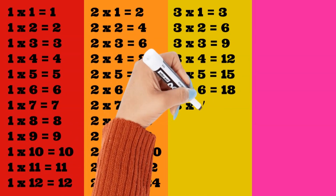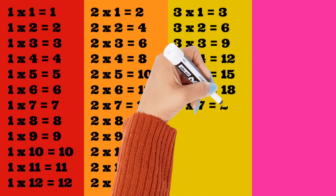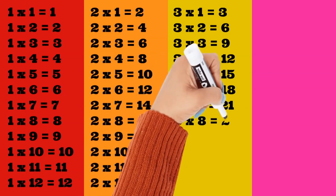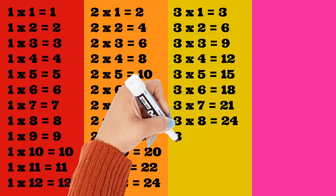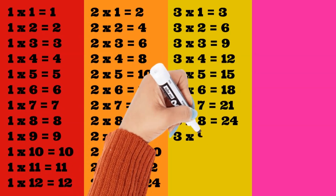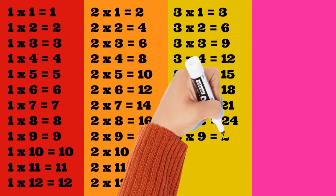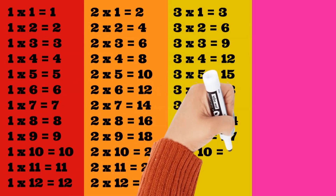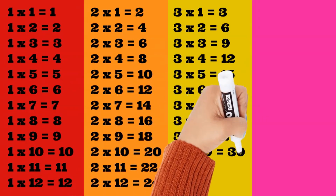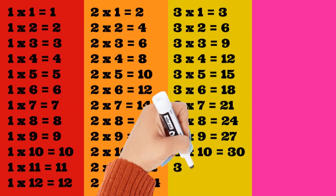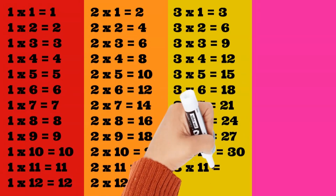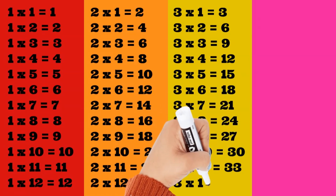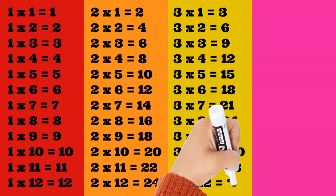Three times seven is equal to twenty-one. Three times eight is equal to 24. 3 times 9 is equal to 27. 3 times 10 is equal to 30. 3 times 11 is equal to 33. 3 times 12 is equal to 36.